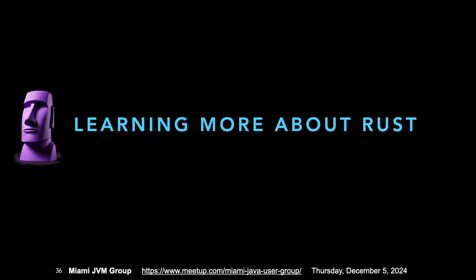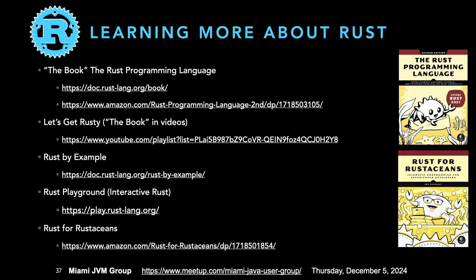If you want to learn more about Rust, here are some materials. What's called 'The Book' — the Rust Programming Language book — is freely available online or you can buy a hard copy. They also have videos covering the chapters in the Rust book. There's Rust by Example for folks who want to see code examples, and an interactive Rust playground where you don't have to install anything — you can go on the website and start experimenting. A more advanced book is 'Rust for Rustaceans,' covering more advanced topics. This is enough to get you going.